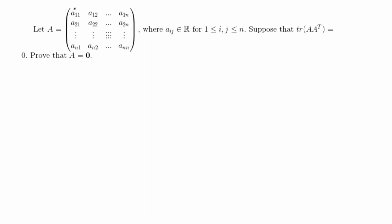So for any size n square matrix A, if the trace of A times A transpose is equal to zero, we have to prove that every entry of A must therefore be equal to zero. Let's go ahead and get started with the proof.